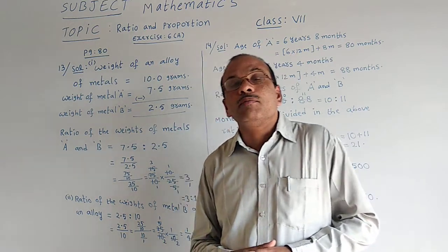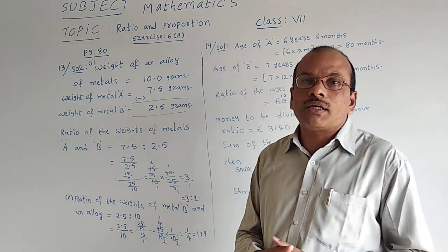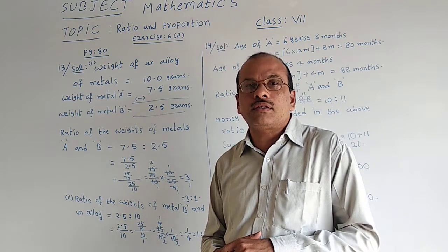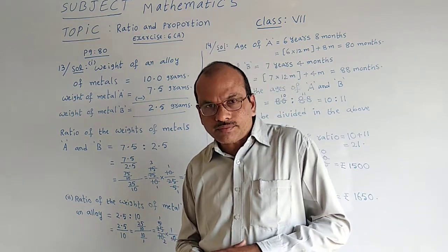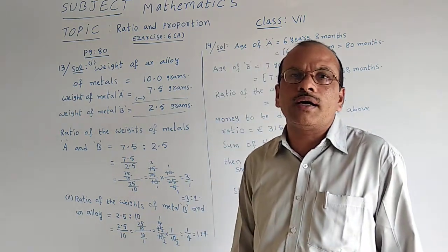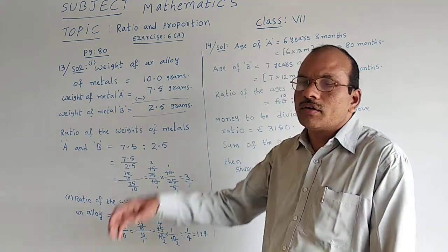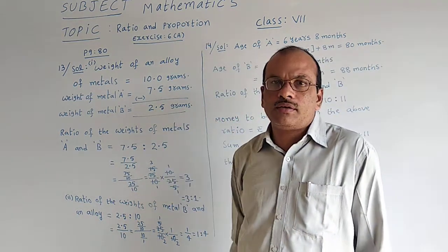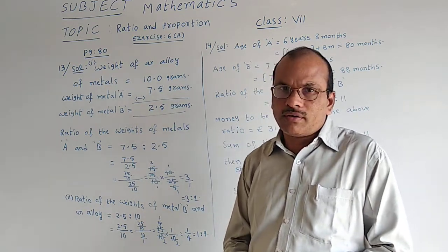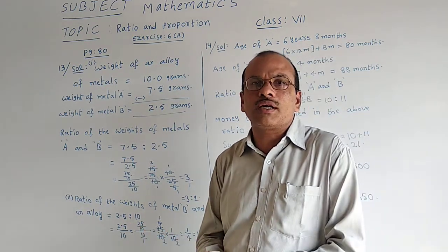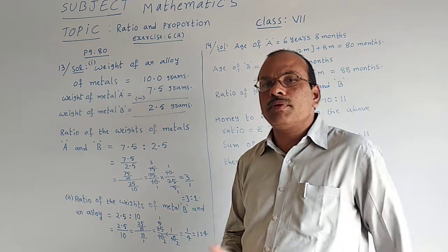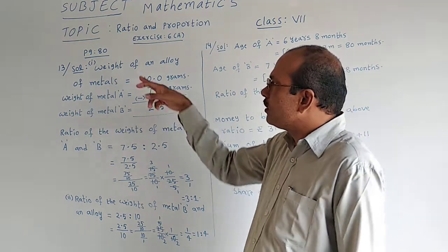Alloy is nothing but mixture of metals available in the earth. When we dig the earth, we will get some metals - iron, zinc and all those. So those metals are available in a mixture, a mixed condition. Two, three metals were mixed in one condition. The mixed part is called an alloy.